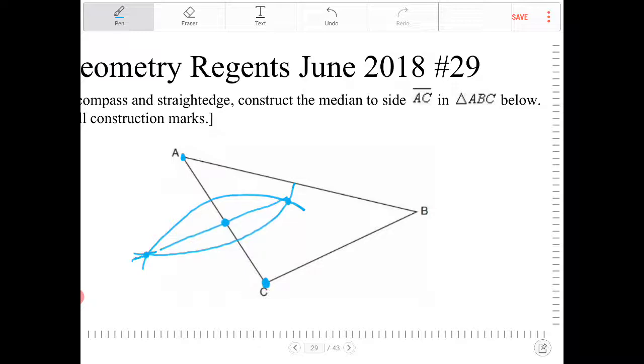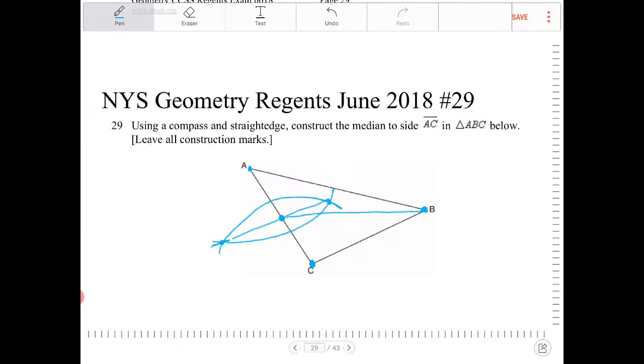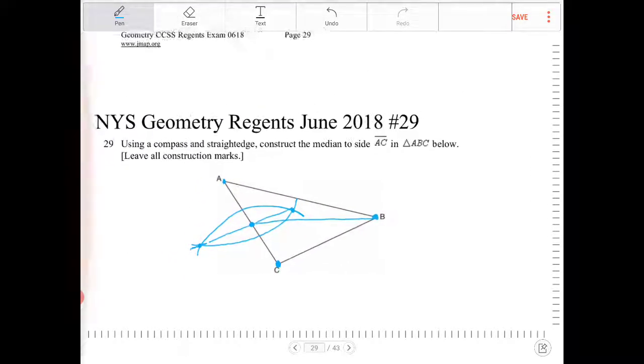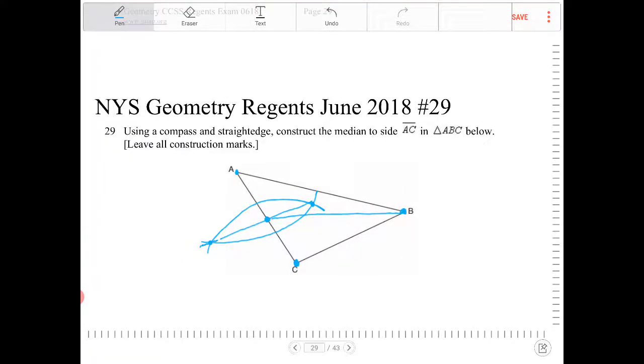The last step you're going to do is connect the dots between the midpoint of AC and point B. So you're going to take your straight edge, and you're going to line it up, and you're going to draw the median connecting point B and the midpoint of AC. And that's the construction of the median from B onto AC.